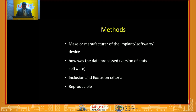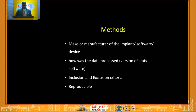Describe the manufacturer or make of the implant, software, or device you're using. Be very clear about how data was processed, including the version of your statistical software. State your inclusion and exclusion criteria clearly. If you describe all this in your methodology, the paper becomes reproducible — a person across the globe should be able to reproduce your study from your methods.